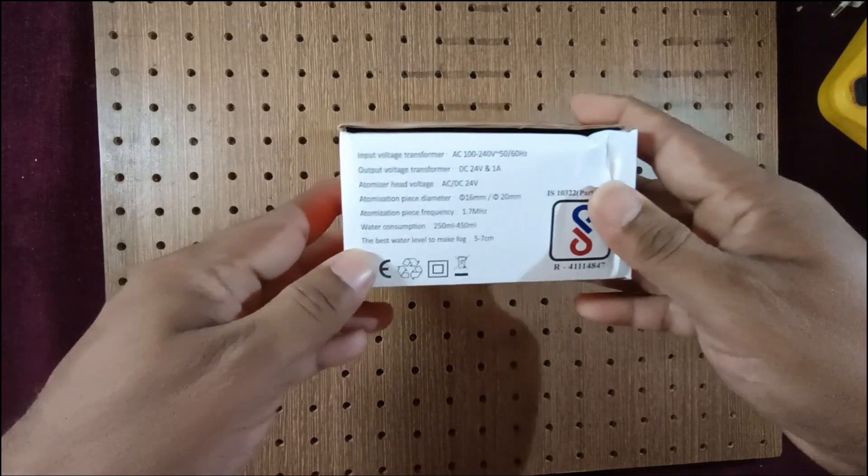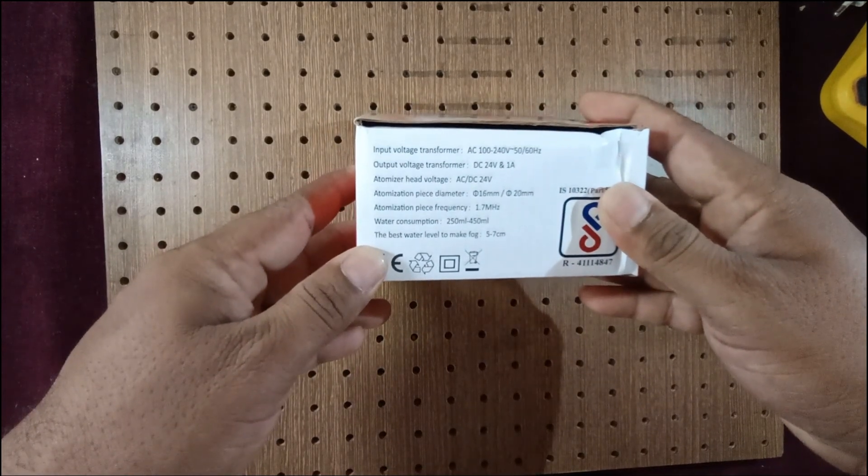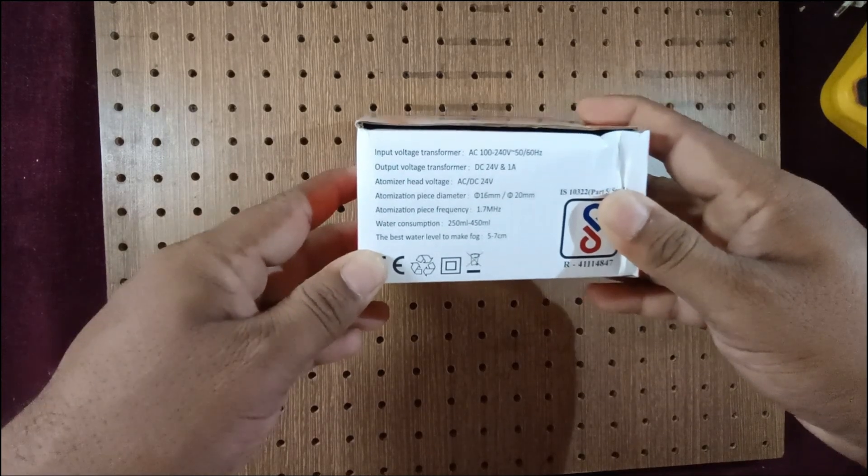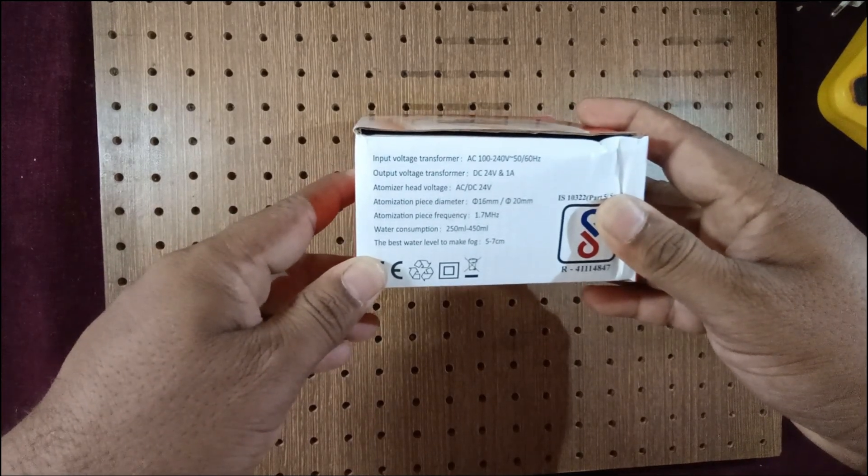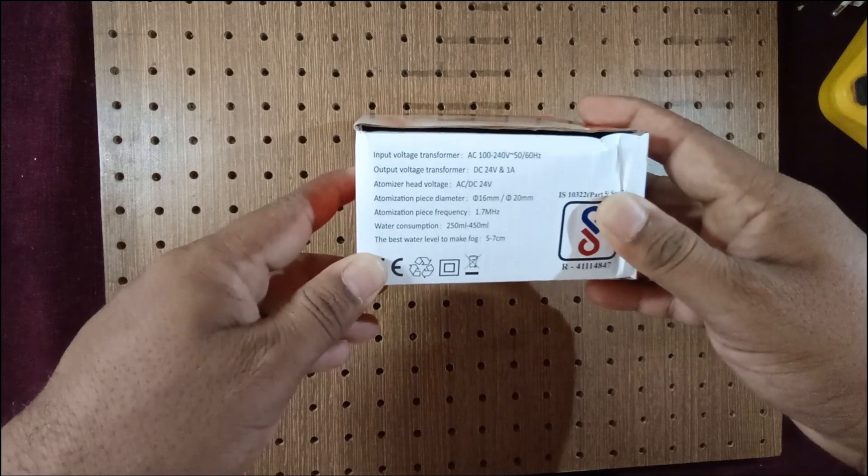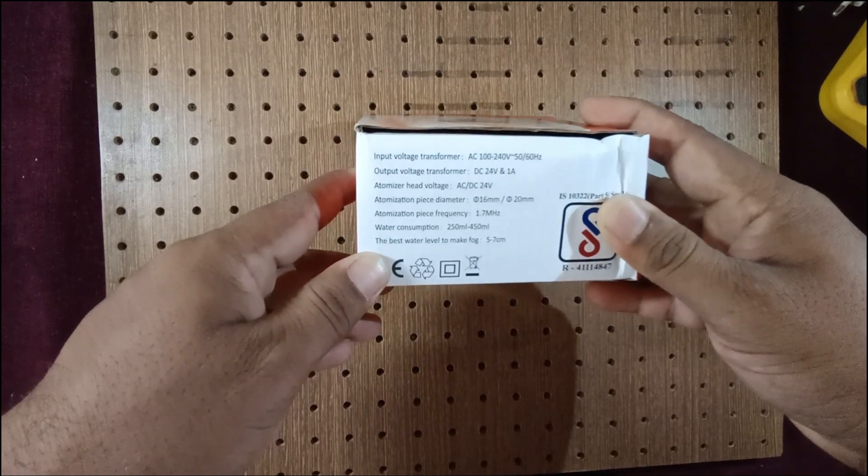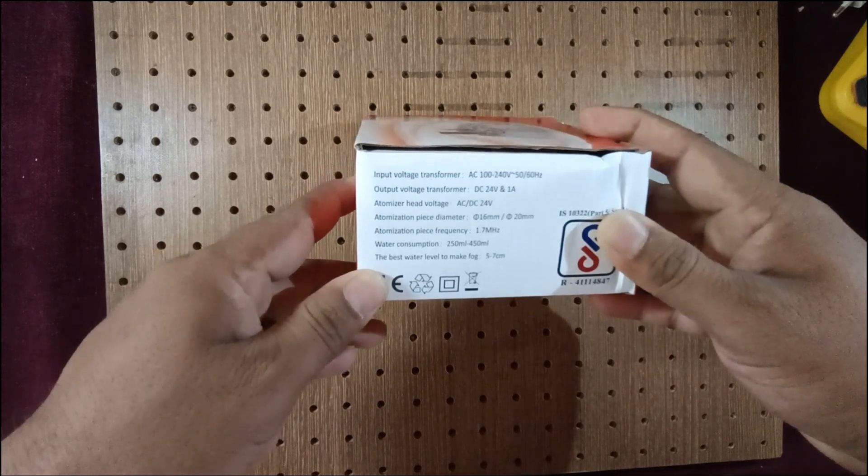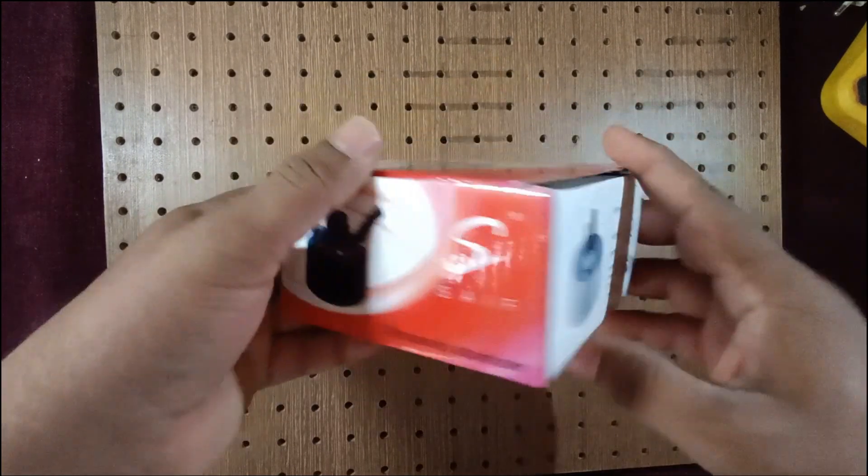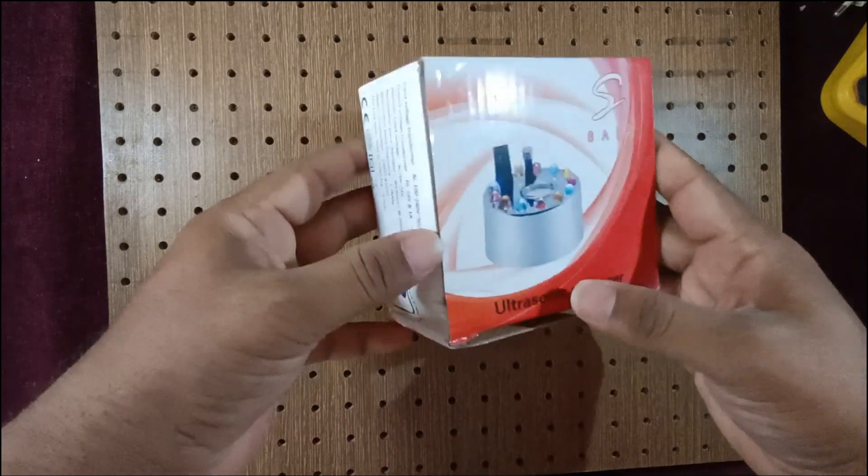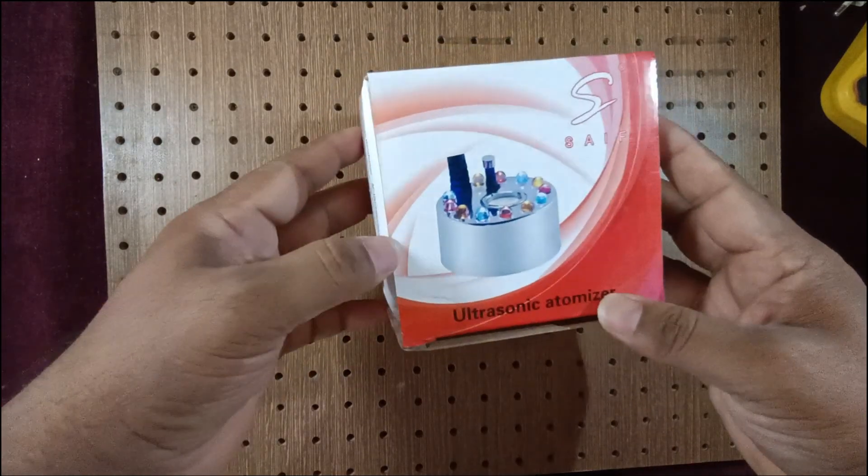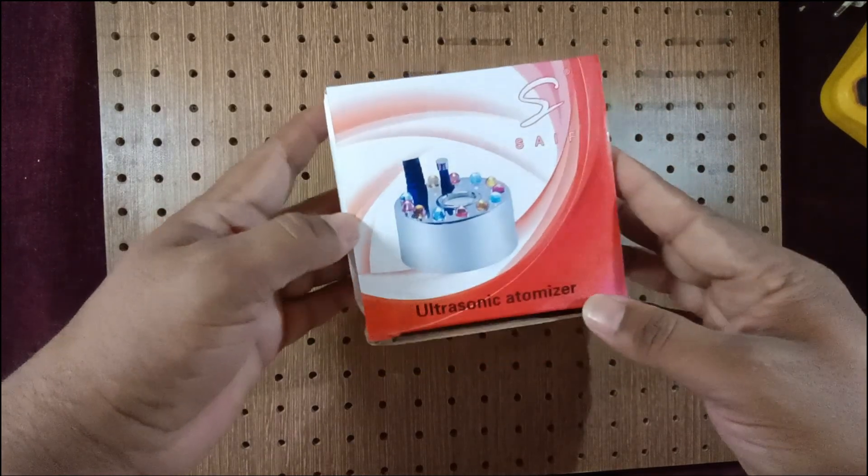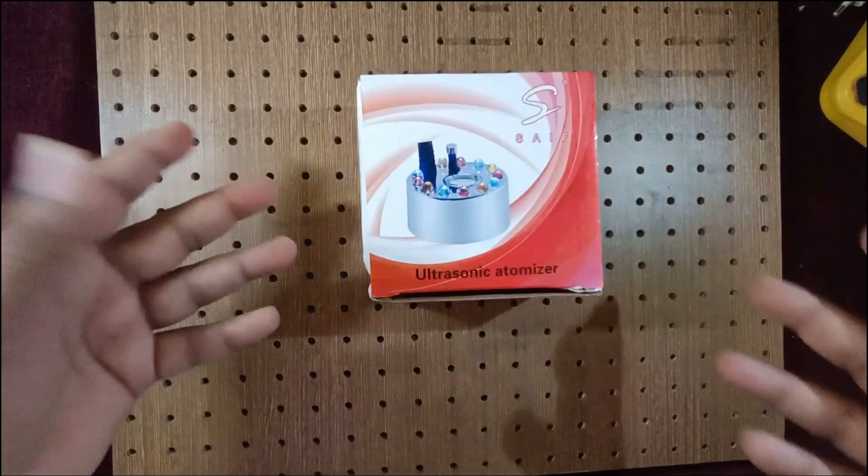Water consumption per hour is 250 ml to 450 ml depending upon the level of the water. For making better fog, the water level should be five to seven centimeters. The advantage of this type of product is that it's very small and compact, operates at low voltage, and does not generate any heat.